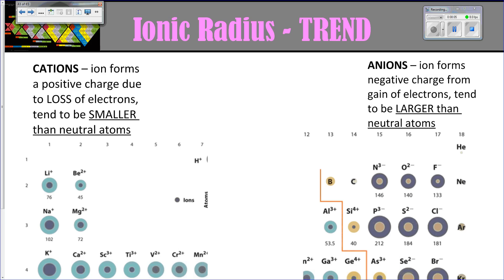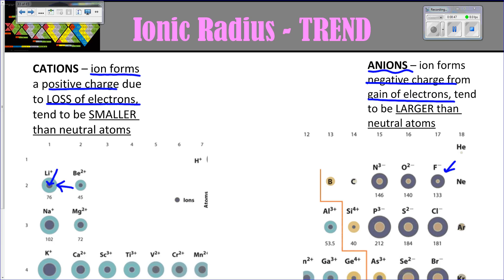The last thing to think about with atomic radius is the ionic radius trends. Cations — ions that have formed a positive charge because they have lost electrons — will actually end up being smaller than their neutral atoms. You can see that the ion is much smaller than the original atom. The opposite is true for anions: anions carry a negative charge because they have gained electrons, and those are actually going to be larger than their neutral atom — much larger. That's true for all cations and all anions.